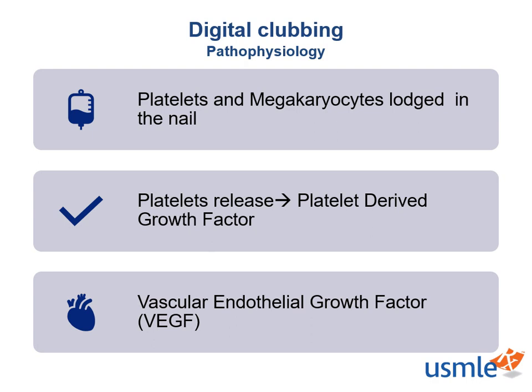We don't know the exact mechanism, and they're not really going to ask you what it is. But it's thought that in some patients with intrapulmonary shunts, platelets and megakaryocytes become larger than your digital vasculature — the small vasculature in your finger. Because these are megakaryocytes and platelets, they release growth factors, including platelet-derived growth factor and vascular endothelial growth factor, which ultimately leads to the growth of those fingernails.